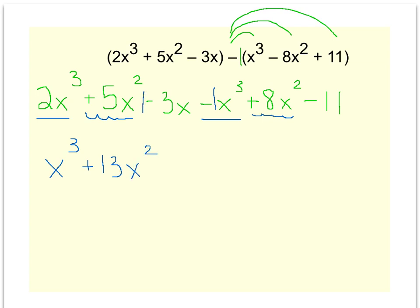Then what comes next? I've got a negative 3x. Well, I don't have any other terms that just have an x behind them, so I'll bring the negative 3x down. And same with my constant. I only have one constant, so there's nothing to combine it with. That will be a negative 11.